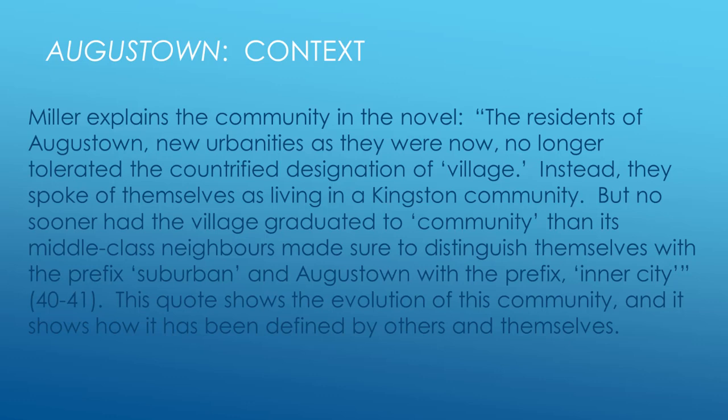Another important contextual element in the novel is Rastafarianism. Miller shows the prejudice against this community, particularly in regards to mainstream Jamaican Christians. The character of the teacher demonstrates the painful truth that many within this group faced at the time and still face today. I will discuss this religion more in the upcoming slides. One very important element within the novel is the mythical development of the community and its beliefs. Miller shows the development of this community in the burgeoning Kingston area over the 20th century.